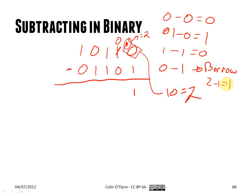Using the borrow there, we just keep going as before. 0 minus 0 is 0. 1 minus 1 is 0. And again 0 minus 1 — we need to borrow from the next digit. If this was a 0, as in decimal, we would just keep borrowing along. 2 minus 1 is 1, 2 minus 0 is 0. So that's a simple example of subtracting in binary.